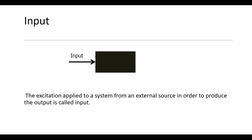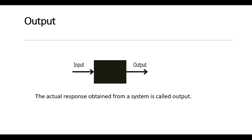Input is an excitation applied to the system from an external source in order to produce the output. A system is a physical interconnection of components, so we apply an external signal — that is the input — to generate the output. The actual response obtained from a system when input is applied is called the output.